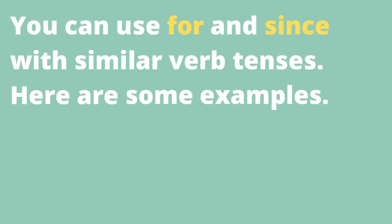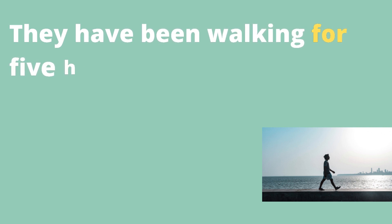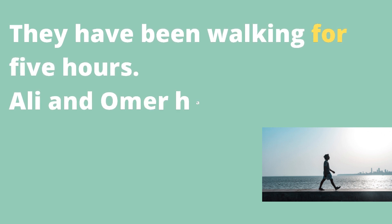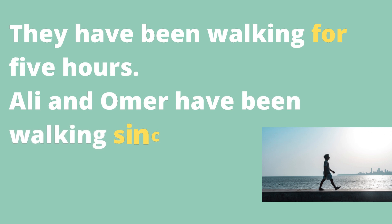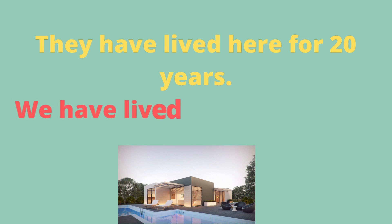You can use 'for' and 'since' with similar verb tenses. Here are some examples: 'They have lived here for 20 years.' 'We have lived here since 1955.'